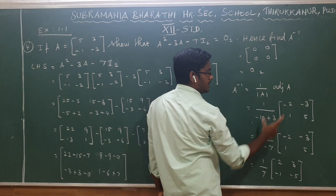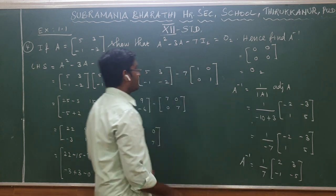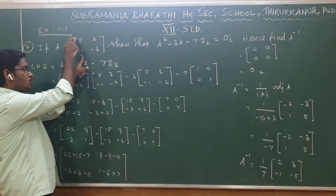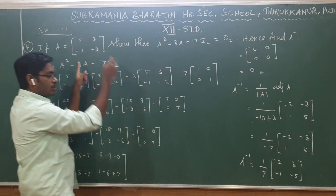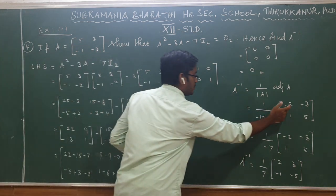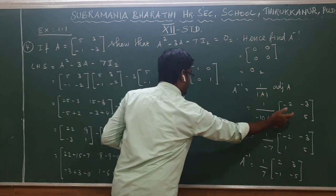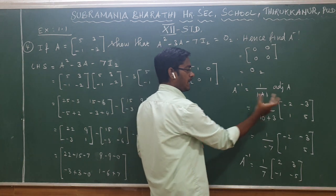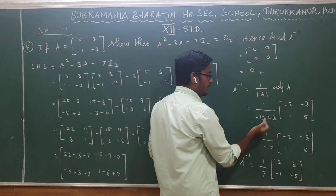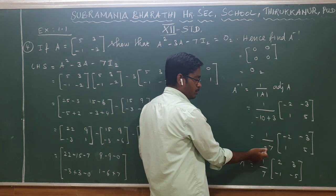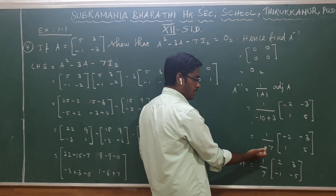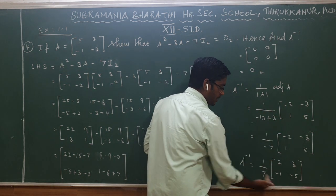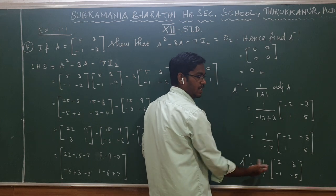For the adjoint of A: change the main diagonal — so minus 2 becomes 5 and vice versa, swap them. For the other diagonal, change the signs and apply them directly. The result gives us the adjoint matrix. Then, multiply 1 over minus 7 by the adjoint to get A inverse.